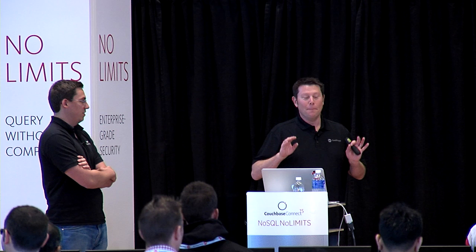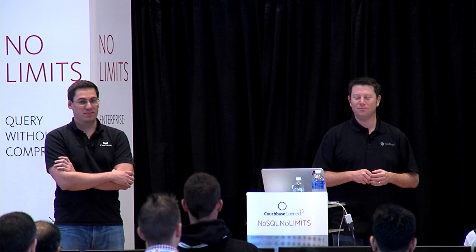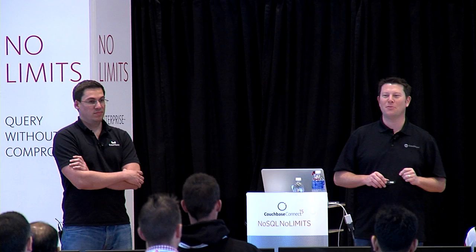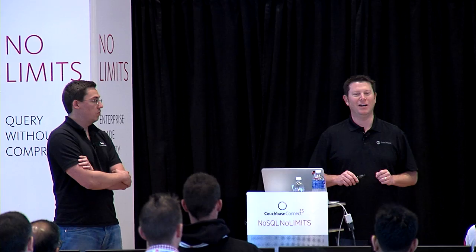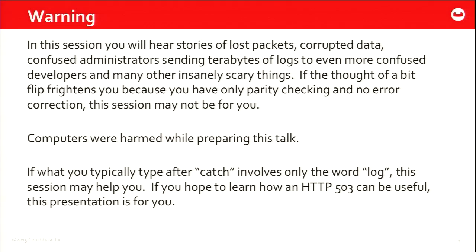We did harm a couple computers in preparation of this talk. Luckily there is no American Society for the Protection of Computers. If what you normally type after catch involves the word log, then you might actually learn a thing or two here. Brian Cantrell had mentioned this morning something about modular E-cache parity errors — that's a reference to a hardware problem we had at Sun. Brian and I both worked at Sun. There was a series of processors that had no error correction circuitry, only parity — the E10K — so it could tell your data was corrupt but couldn't do anything except panic and crash the whole machine.